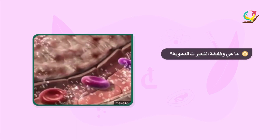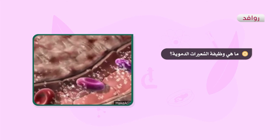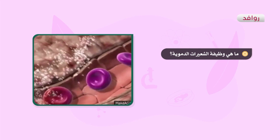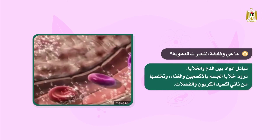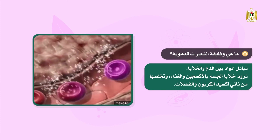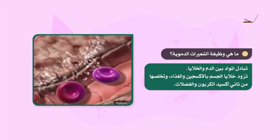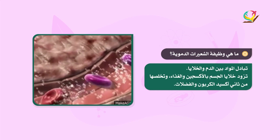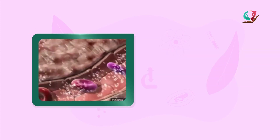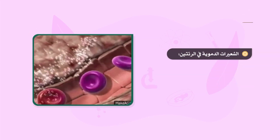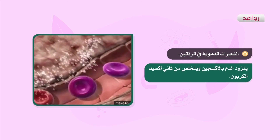وظيفة الشعيرات الدموية هي تبادل المواد بين الدم والخلايا، حيث تزود الشعيرات الدموية خلايا الجسم بالأكسجين والغذاء وتخلصها من ثاني أكسيد الكربون والفضلات. أما في الرئتين فإن الدم المار في الشعيرات الدموية يتزود بالأكسجين ويتخلص من ثاني أكسيد الكربون.